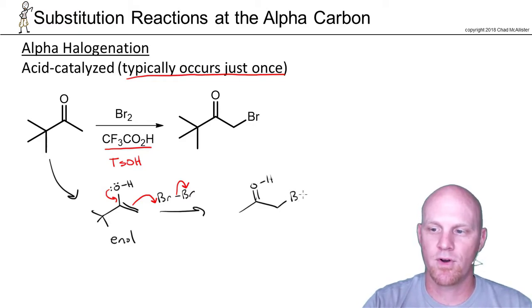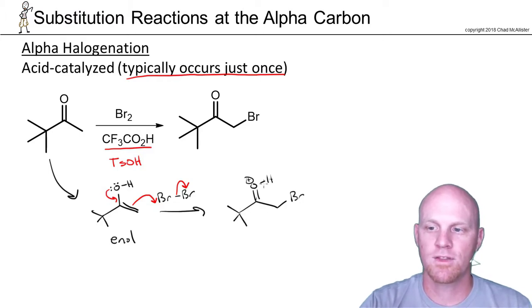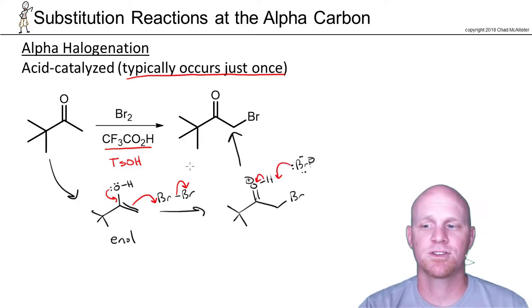Now we've got a new bromine bonded at the alpha carbon. So in this case, we've just got to simply do a proton transfer here, and that other bromide ion we just formed is probably the most likely candidate to come and do a proton transfer deprotonate. And that's how you get your product here.